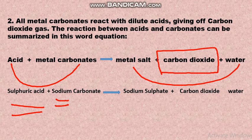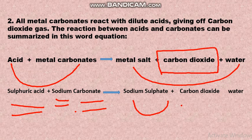For example, the metal is sodium and the carbonate of sodium is sodium carbonate. The acid is sulfuric acid. The products are sodium sulfate, carbon dioxide, and water — produced when acid reacts with metal carbonate.